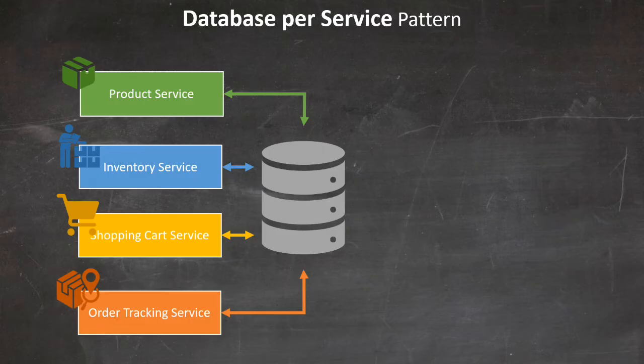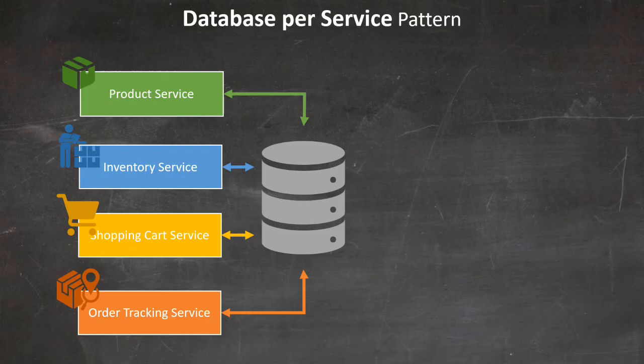Before implementing the database per service pattern, it's crucial to have a solid understanding of both your business processes and your data. Simply put, if you don't have a good handle on your business processes, you won't be able to define clear boundaries between the microservices. And if you don't govern your data — if you don't know its sources and who uses it — it's just unwise to apply this pattern. Doing so will likely exacerbate existing issues.